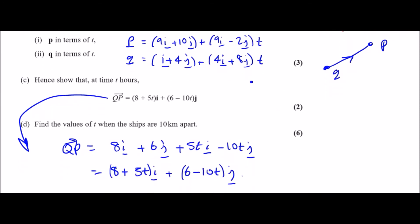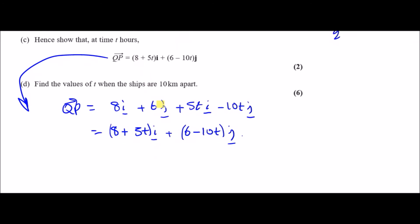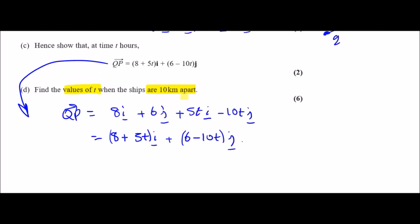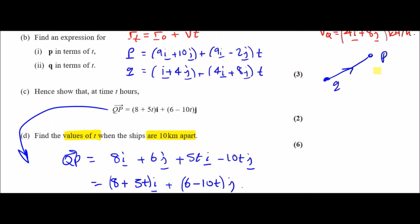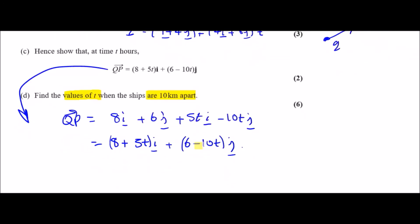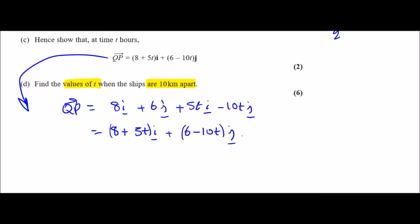Part d: Find the values of t when the ships are 10 kilometers apart. This is talking about distance. You can think of this as a displacement vector, but it's also the distance if you take the magnitude of this vector. To find the magnitude of QP, we take the square of each of these values and square root the whole thing: square root of [(8 + 5t)² + (6 - 10t)²], and this equals 10.